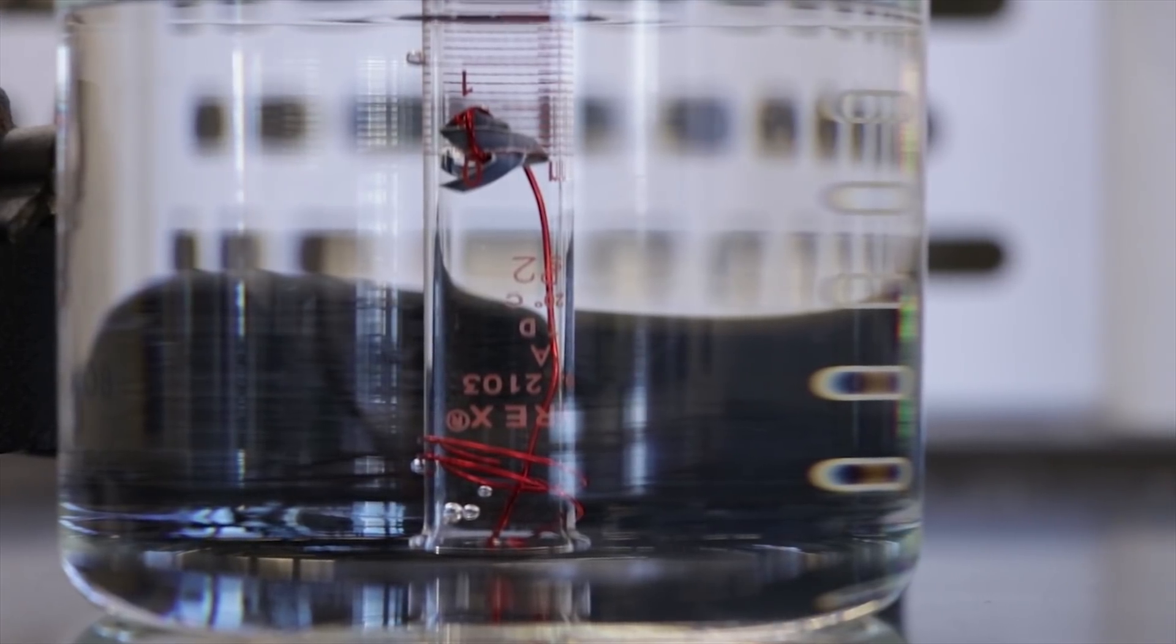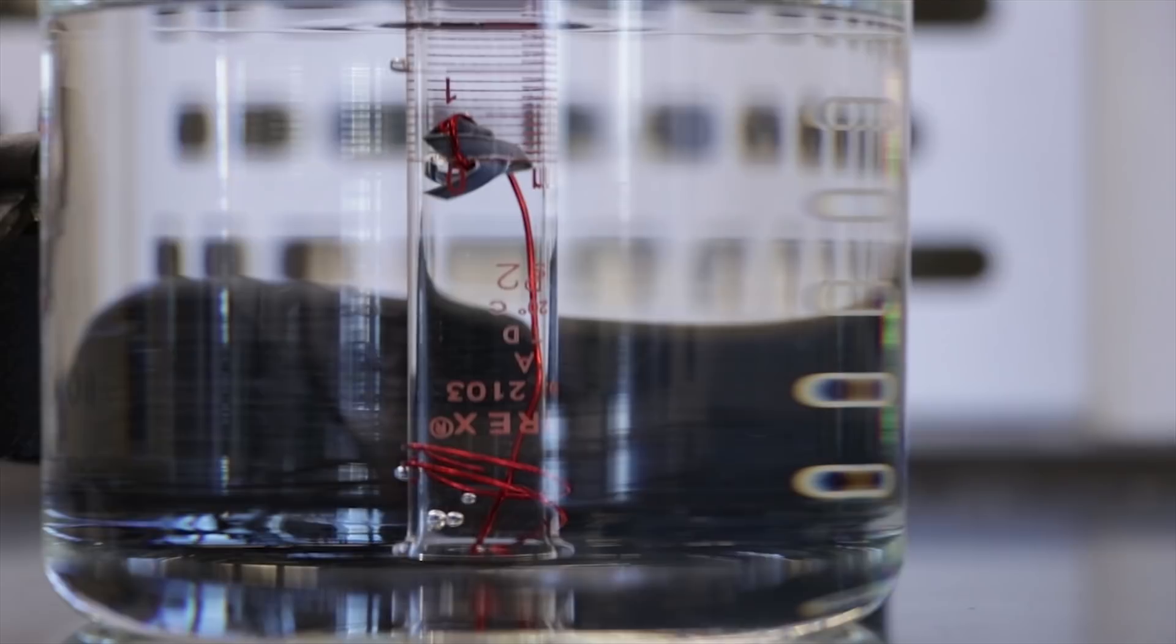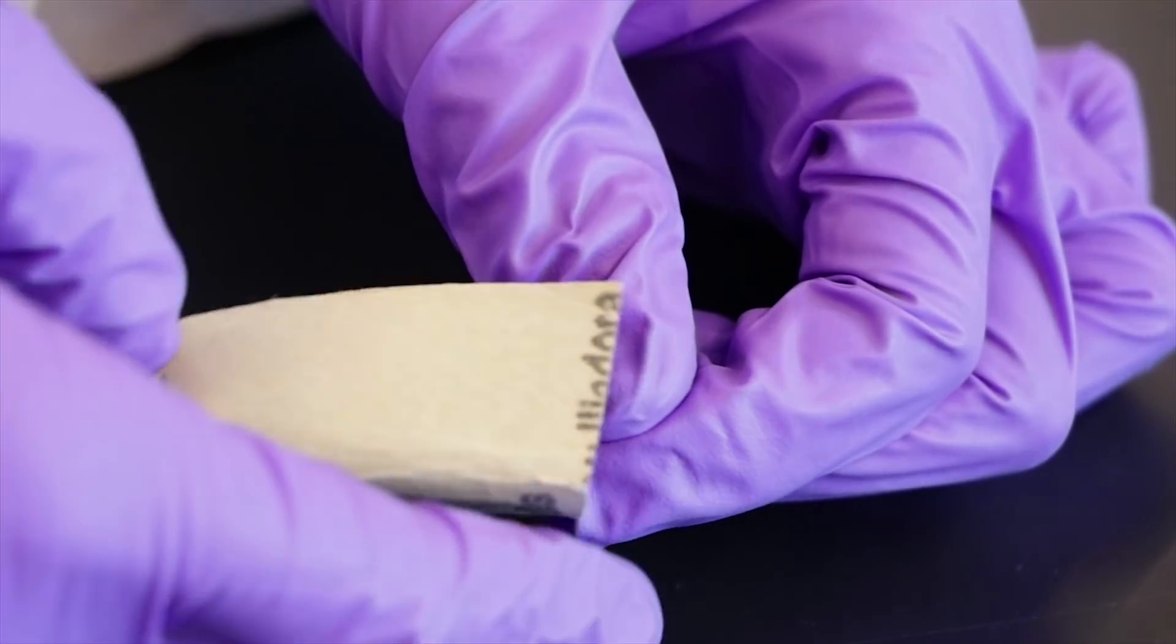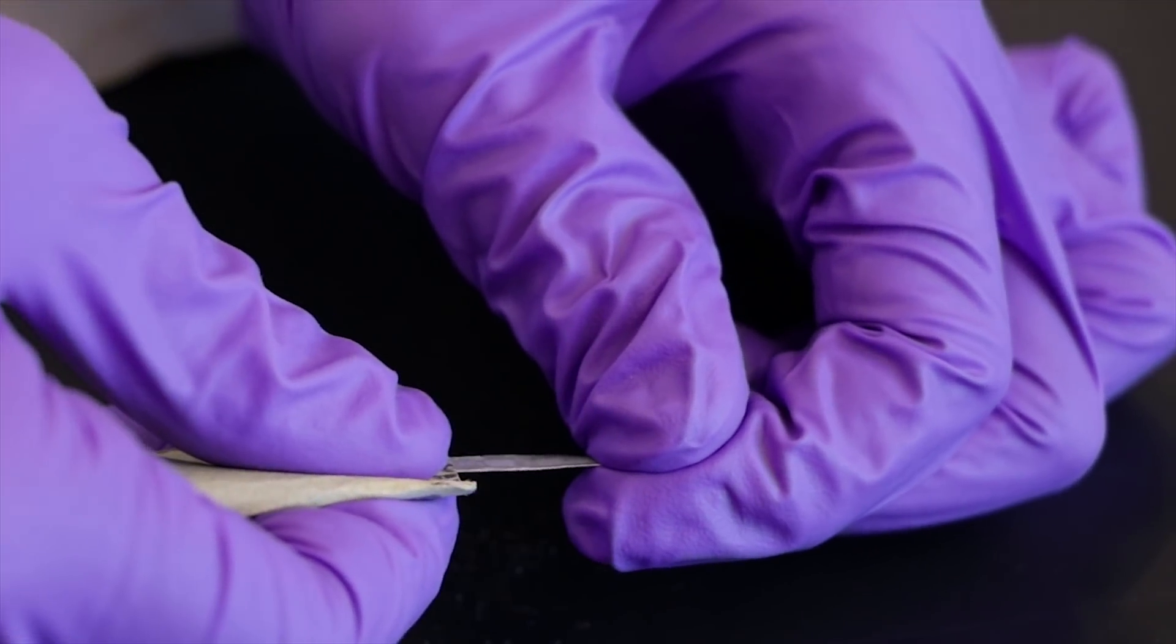If some of the magnesium attached to the copper wire remains unreacted at the end of the reaction, it is an indication that the oxidized layer of the ribbon was not completely sanded off.